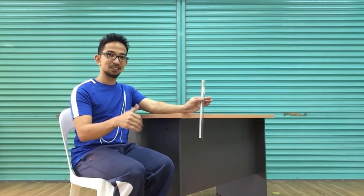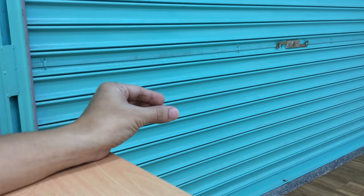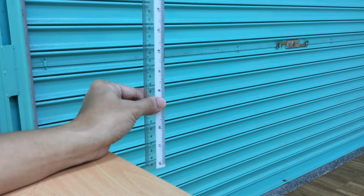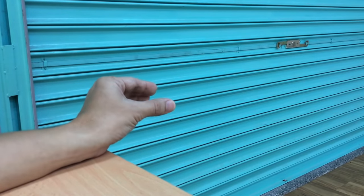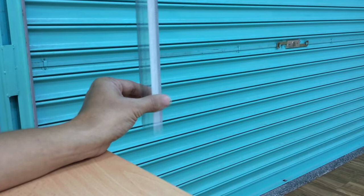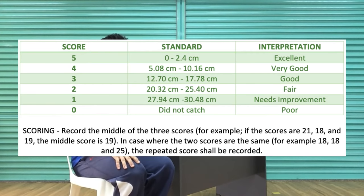Do three tries. For the partner or facilitator, hold the ruler at the top, allowing it to dangle between the thumb and fingers of the performer. Hold the ruler so that the 12-inch mark is even between the thumb and the index finger. No part of the performer's hand should touch the ruler. Drop the ruler without warning and let the tester catch it with his or her thumb and index finger. Record the score on the upper part of the thumb. This is the scoring for the stick drop test.